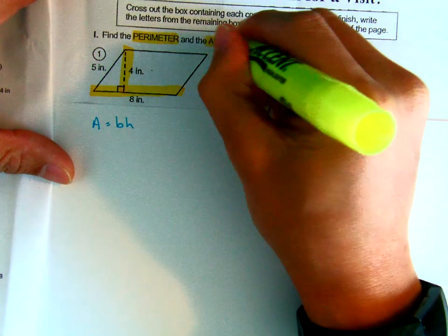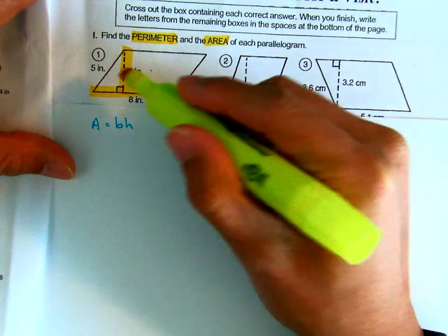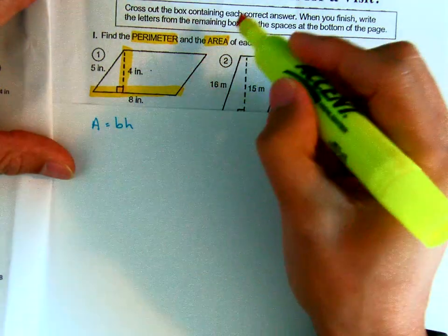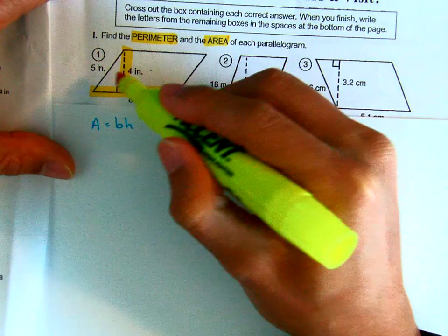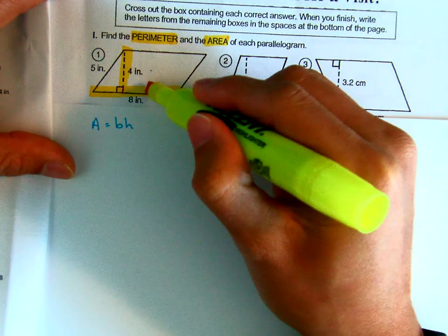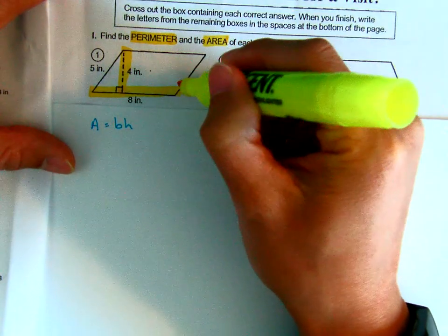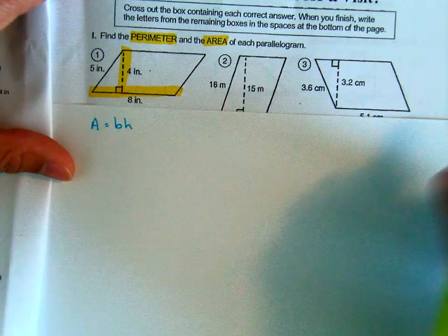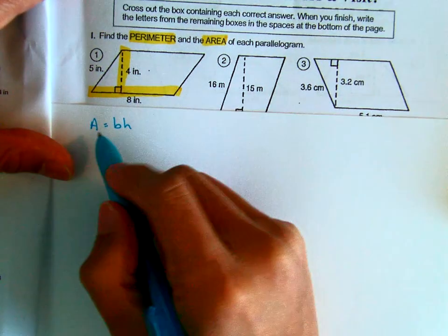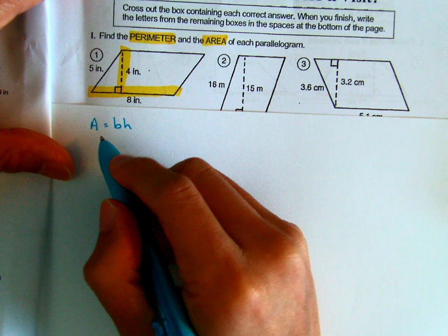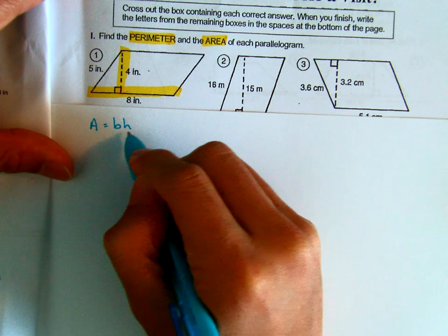The perimeter of the parallelogram is when you add up all the sides. The area is how many square inches this parallelogram takes up. When you want to find the area you need to use the formula for area of a parallelogram which is base times height.